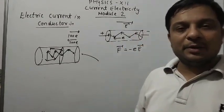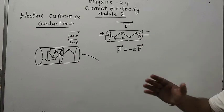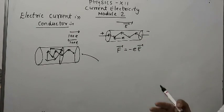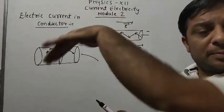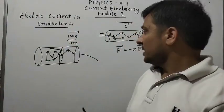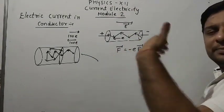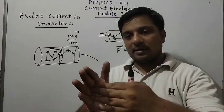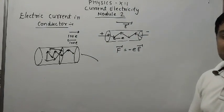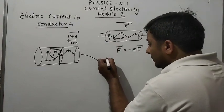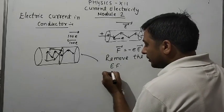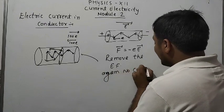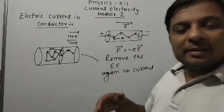Electrons never move in a straight path. When an electron moves due to the electric field it is accelerated, then it strikes a vibrating ion and comes to rest. Again it is accelerated, then strikes again — its motion is like pause and start, pause and start. If we remove the electric field, there is again no current. This is the system of electric current in a conductor.